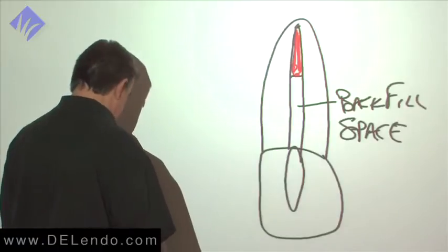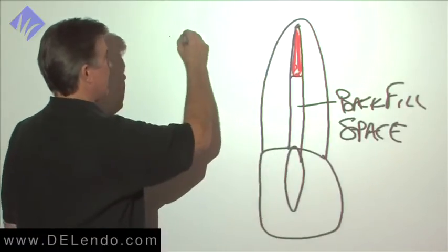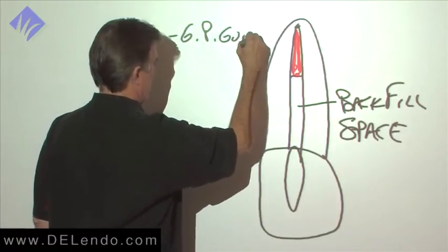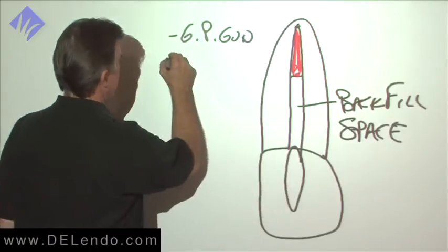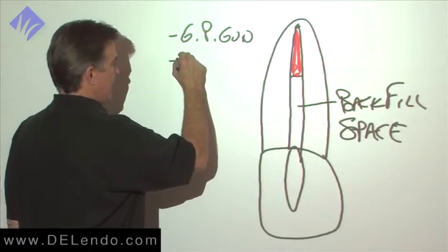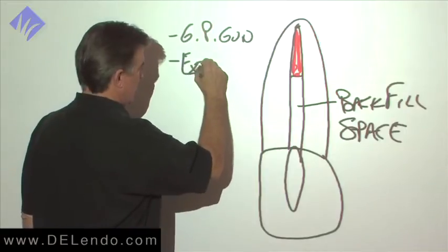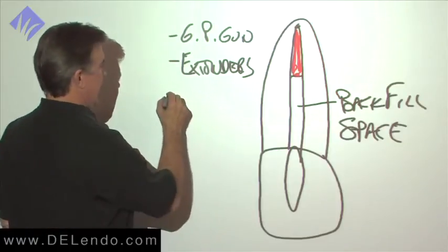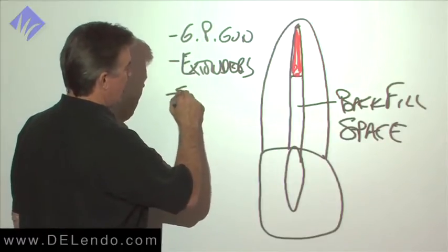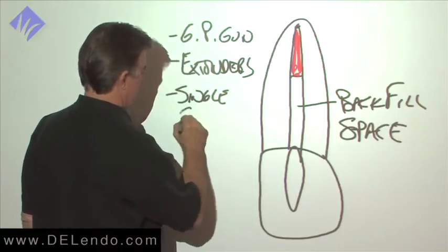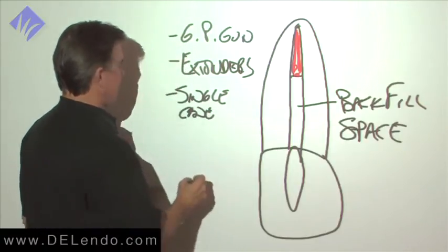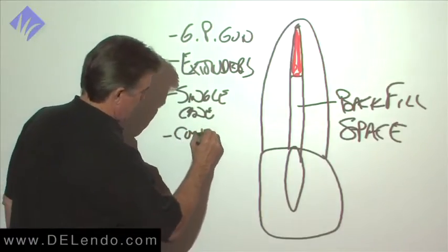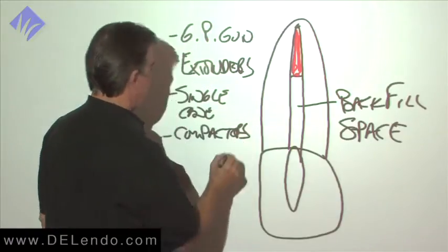We call this the backfill space. The things that we're going to backfill with - we can syringe fill that, use a gutta percha gun. Those are the ones we pull the trigger by hand. These are all heated gutta percha. We have extruders. Those are the electric motor driven versions. And we also have single cone backfill. You could also use compactors for backfilling.